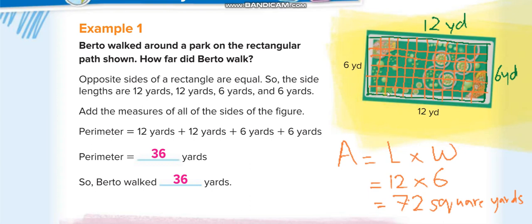Since this side is 12, I divide it into 12 equal parts. You can see: 1, 2, 3, 4, 5, 6, 7, 8, 9, 10, 11, 12. And since this is 6 yards, I divide it into 6 equal parts: 1, 2, 3, 4, 5, 6. To find how many total square units are inside, you just multiply length by width. Area equals length times width — 12 times 6 equals 72. With area, we always write square units, so here it's 72 square yards.